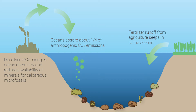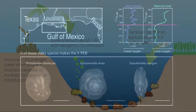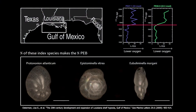Environmental scientists can examine the remains of microorganisms preserved in sediments and compare them to the organisms living today to see how human impacts on the environment have changed the ecosystem. For example, we understand that low-oxygen dead zones in the Gulf of Mexico developed recently in response to increasing fertilizer use in agriculture, by examining microfossils from coastal sediment cores.